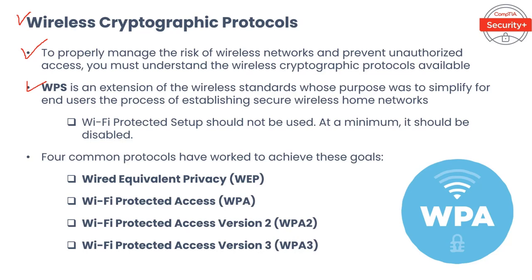WPS provides two certified modes of operation: the first requires the user to enter a PIN code when connecting devices; the second requires the user to simply push a button on the AP. In 2011, however, a major security vulnerability was exposed — so severe that the solution was to turn off WPS altogether. It turned out the user's PIN could be recovered through brute force in as few as 11,000 guesses or within several hours. Disabling WPS was not even enough — a firmware upgrade was required to completely disable the feature. Wi-Fi Protected Setup should not be used; at a minimum it should be disabled.